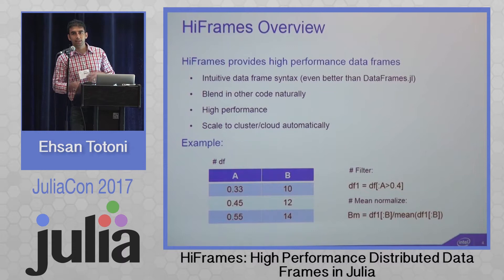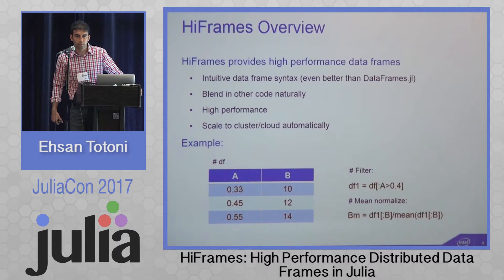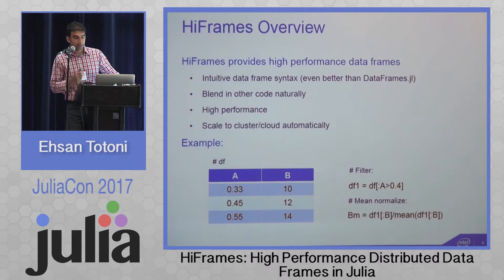We take this filtered data frame DF1 and do mean normalization: take the values of column B and divide them by the mean of all values. Very simple syntax to filter and then mean normalize. Now imagine the same data frame having several billions of rows and running on thousands of cluster or cloud nodes — we want the same syntax to work without any change automatically on this large-scale system. This is the goal we actually achieve in this project.